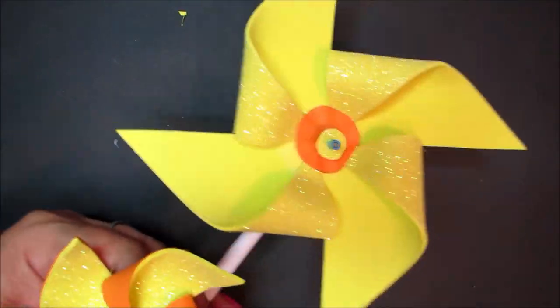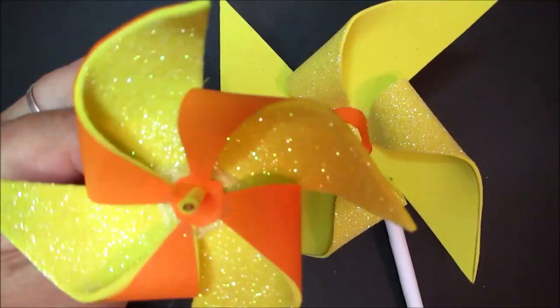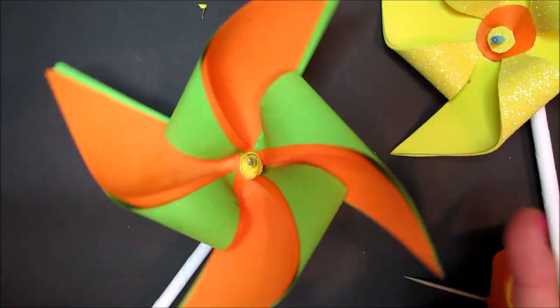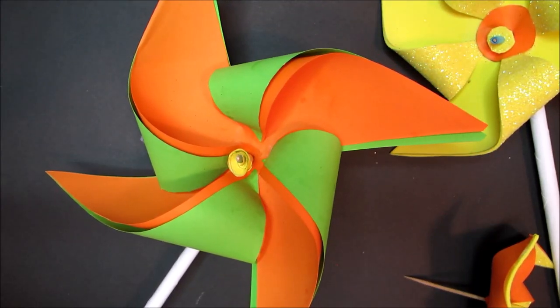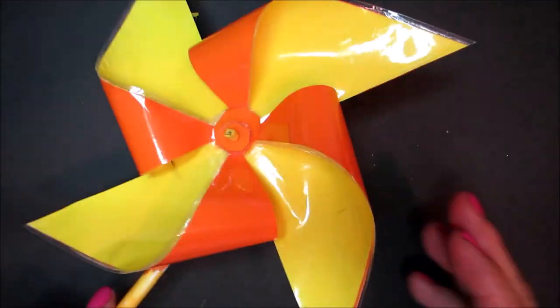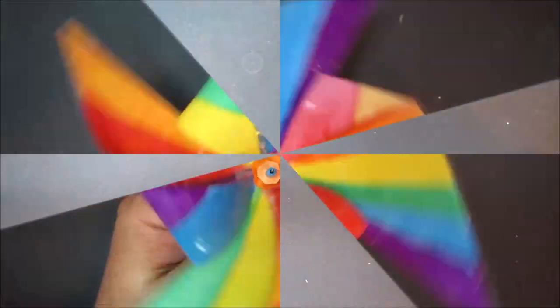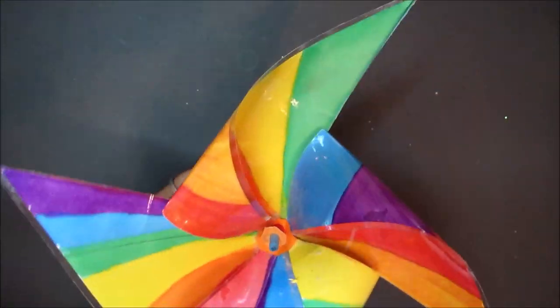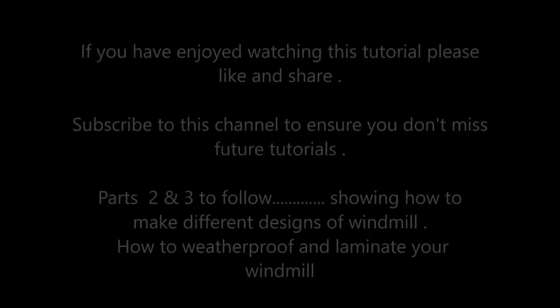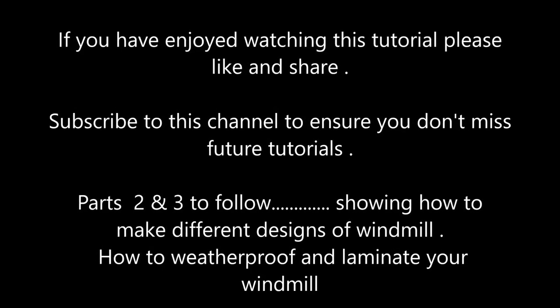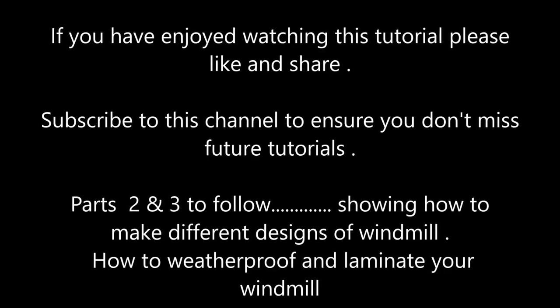In parts 2 and 3 of this tutorial, I'm going to show you how I made these windmills using sparkly foam card. This one I made from two different colors of paper. This one I've done two different colors of paper and then I've weatherproofed and laminated and colored the stick. And this one I took some plain paper, hand painted with rainbow colors and laminated. I hope you've enjoyed watching this tutorial. If you have please like and share, and don't forget to subscribe to this channel so you don't miss any future tutorials.